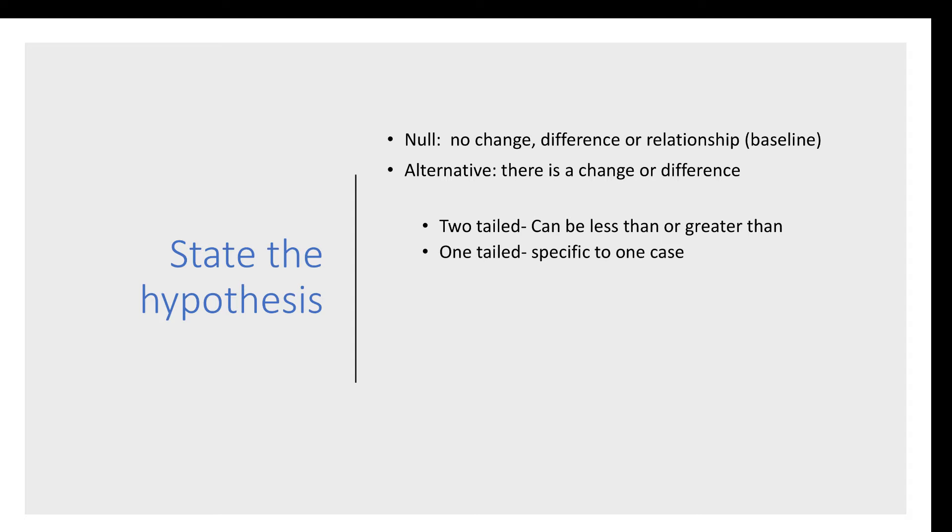The hypothesis can be two-tailed, that means the difference could be less than or greater than, or one-tailed, which is more specific. Let's take a look at my specific case with my claim per mile. In this case, we're going to take a look at determining if my average is different than 8 minutes and 30 seconds per mile.